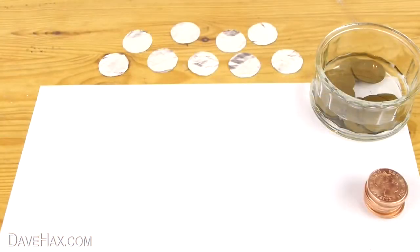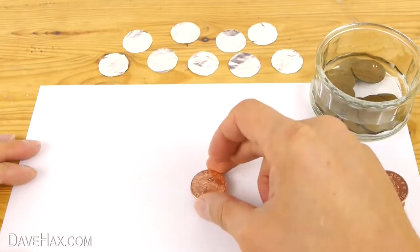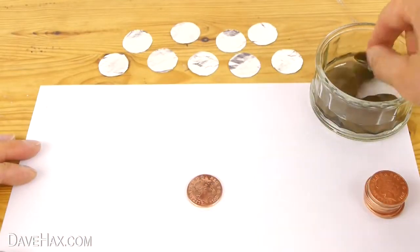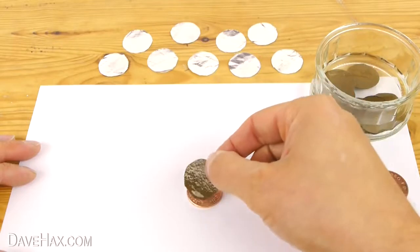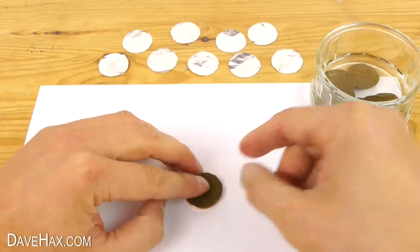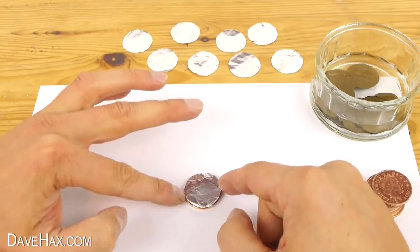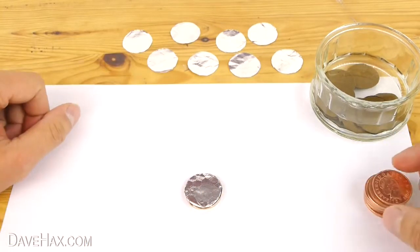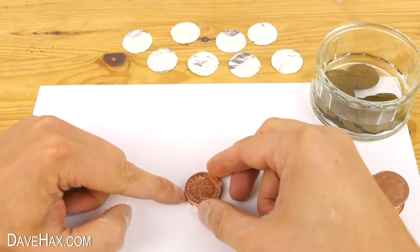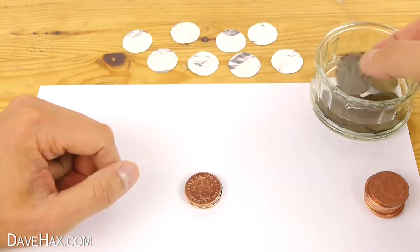We're now going to put the battery together so start by placing down a coin. Then put on top one of the cardboard discs. Then add one piece of foil. Next add another copper coin on top and keep repeating the process.